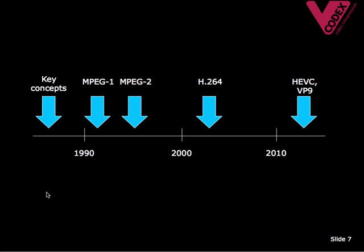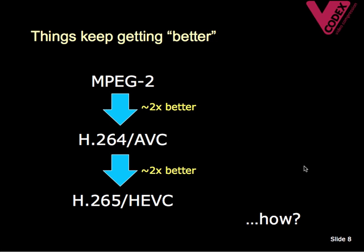Many of the basic concepts of video coding were developed in the 1970s and 1980s. This slide shows some of the major standards over the last 20 years, starting with MPEG-1 in the early 1990s, MPEG-2 which is the standard used for DVDs and digital TV, H.264 which is currently the main standard for video on the internet, on computers, on mobile devices and for HD TV. And in 2013 we've already seen the publication of H.265/HEVC and VP9. Even though all of these standards use the same building blocks and the same basic concepts, things keep getting better. For example, a well-designed H.264 video codec should give you at least twice the compression of an MPEG-2 codec, and H.265/HEVC looks like it has the potential to be twice as good again.